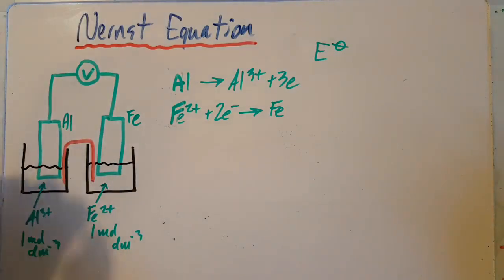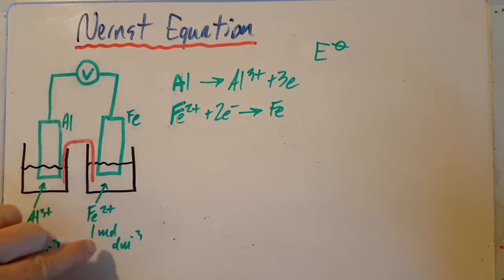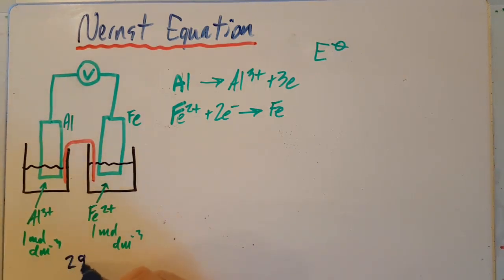A very quick refresher on the standard cell or voltaic cell. I've got an aluminum electrode in a solution of its ions, one molar, it's standard. I have an iron electrode in a solution of its ions, one mole per decimeter cubed, that's standard. It's at 298 Kelvin, standard temperature.